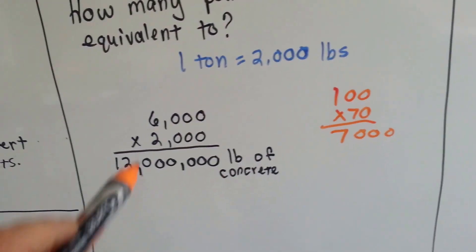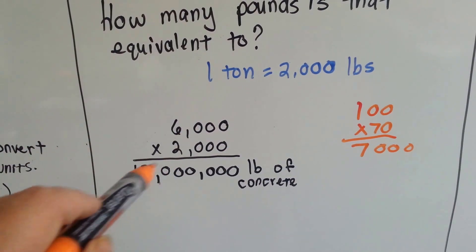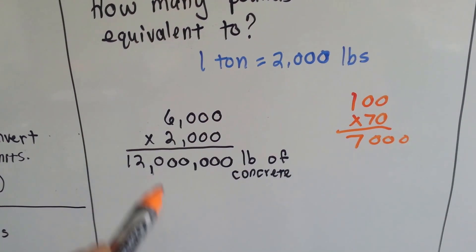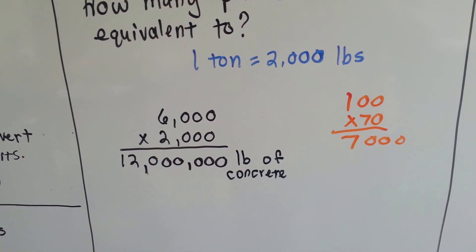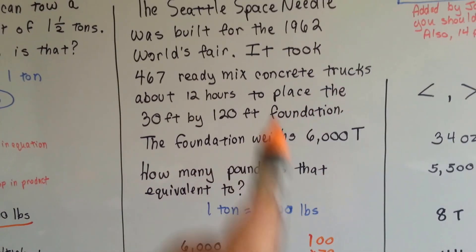Yep. So because we're multiplying a 6,000 and a 2,000, we just make it 12 and add the number of zeros. That's 12,000,000 pounds of concrete in just the foundation of the Space Needle. Alright.